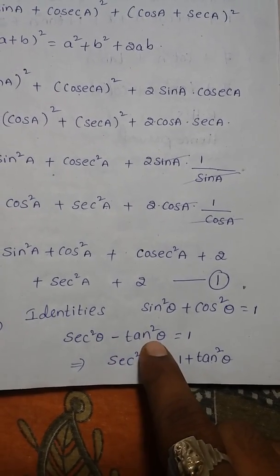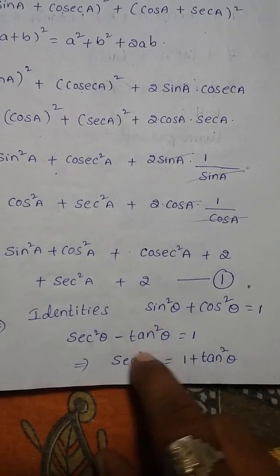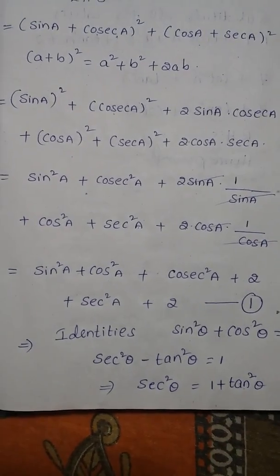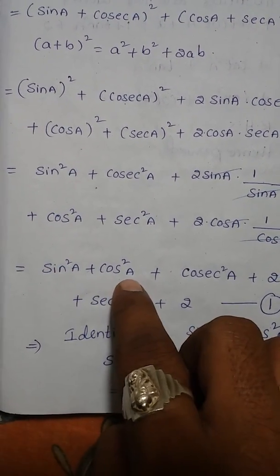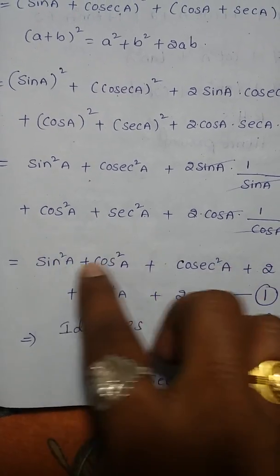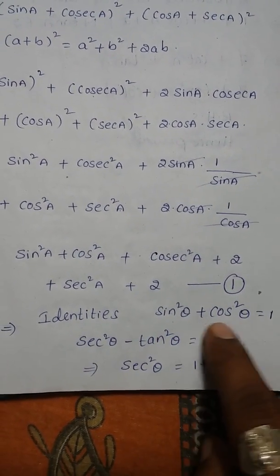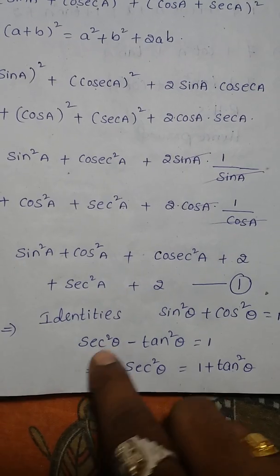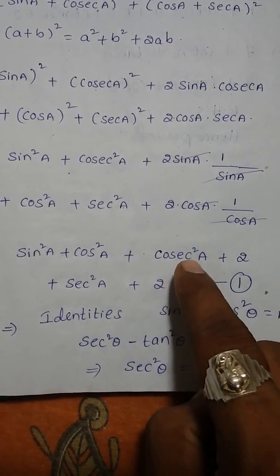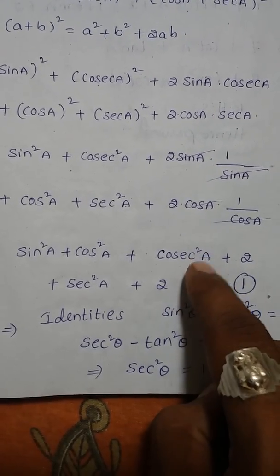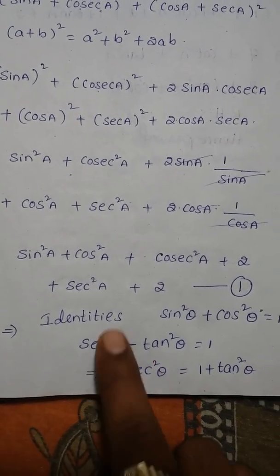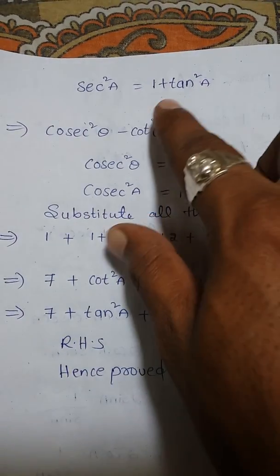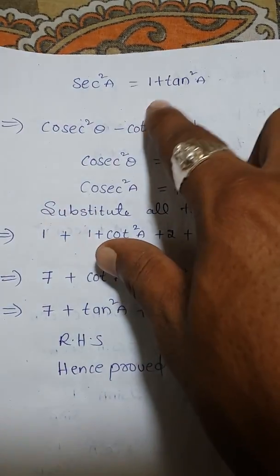Using the identity sec²θ - tan²θ = 1, transposing gives sec²θ = 1 + tan²θ. So sec²A = 1 + tan²A. We replace sec²A in our expression with 1 + tan²A.